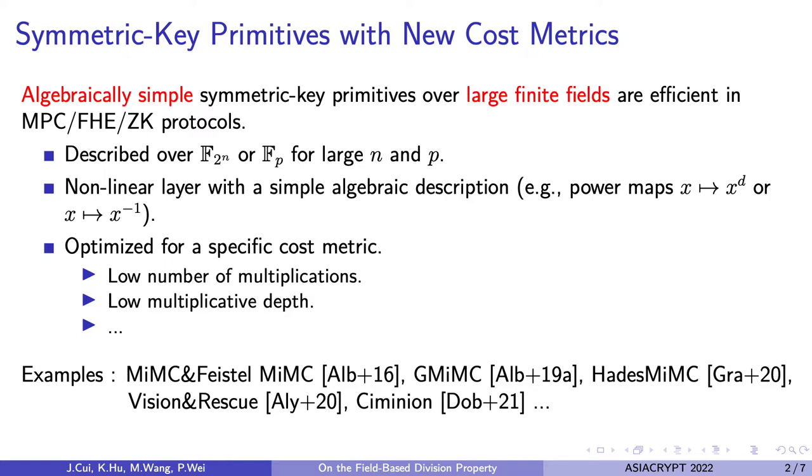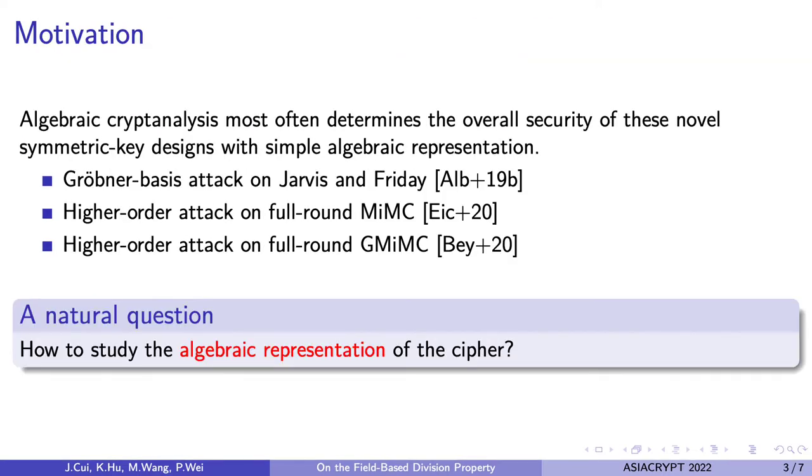As a result, these new primitives are often algebraically simple. Since these primitives can be represented by simple algebraic representations, they are vulnerable to algebraic attacks naturally. Attacks like Gröbner basis attack and higher-order differential attacks have shown powerful results against these primitives. We have Gröbner basis attack on Jarvis and Friday, and higher-order differential attacks on full-round MiMC and GMiMC. So a natural problem is: how can we study the algebraic representation of the cipher?